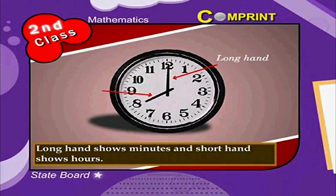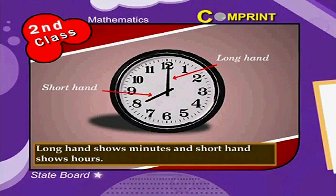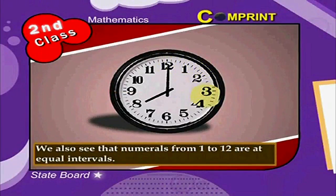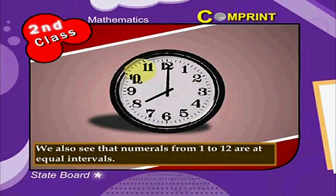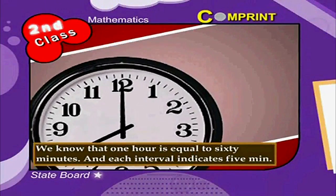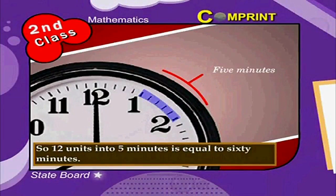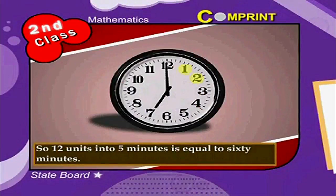The long hand shows minutes and the short hand shows hours. We also see that numerals from 1 to 12 are at equal intervals. We know that 1 hour is equal to 60 minutes, and each interval indicates 5 minutes, so 12 intervals into 5 minutes is equal to 60 minutes.